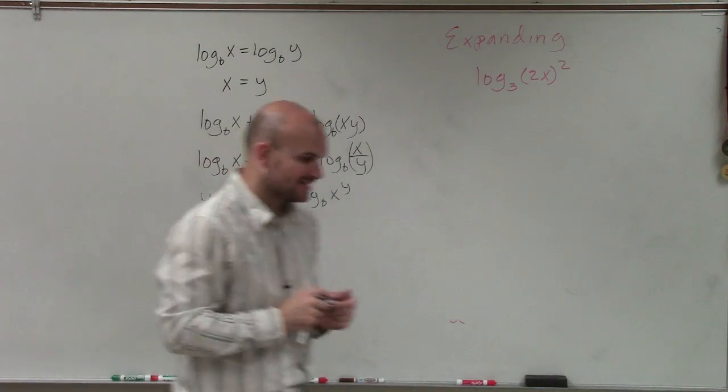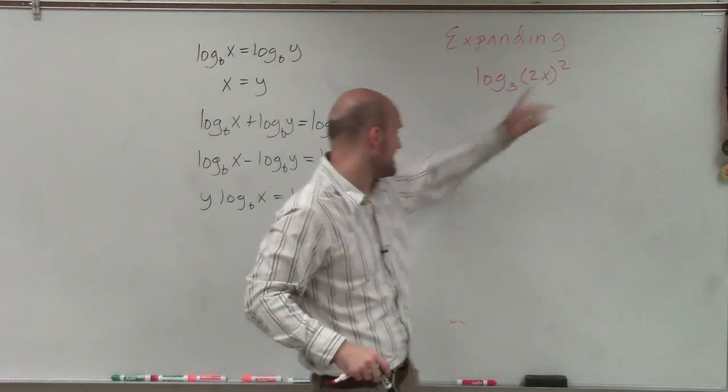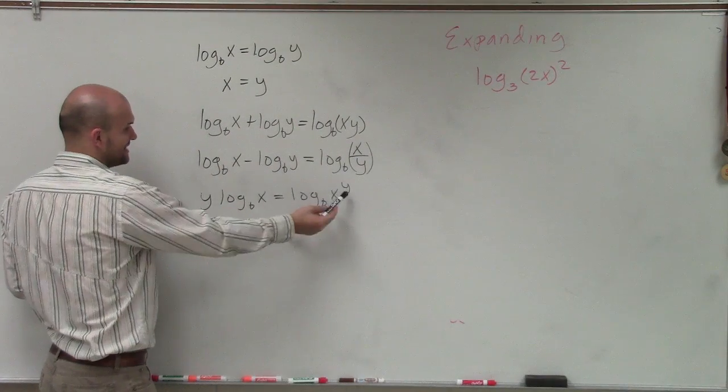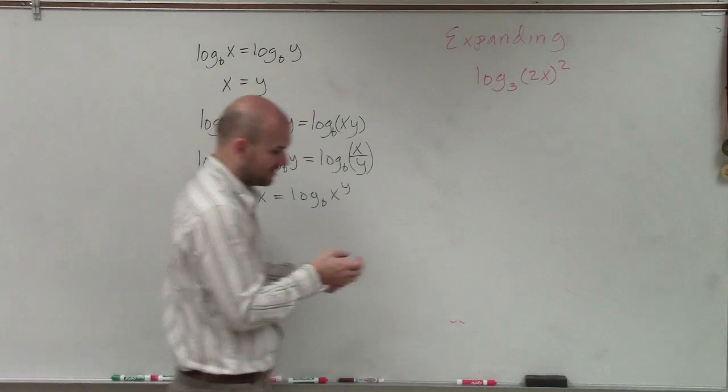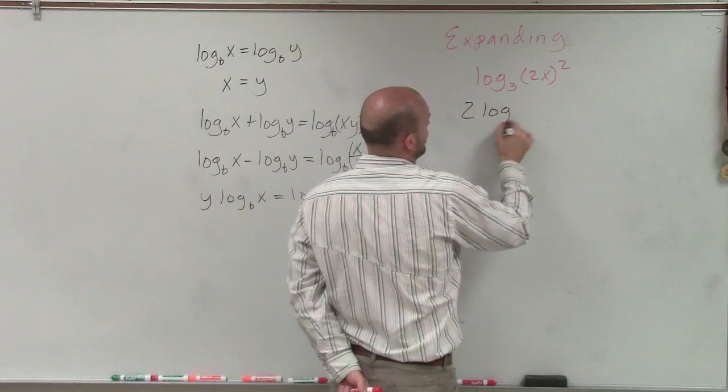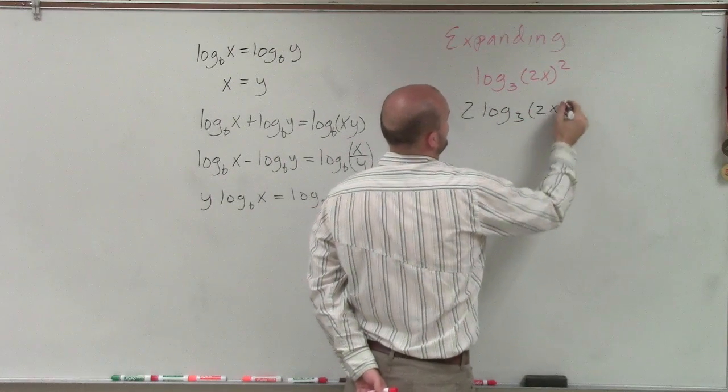So when expanding this, what I'm going to want to do is I can take this exponent up here and I can rewrite it down into the front. So that's going to be my first step when I'm going to expand. So I'm going to bring this down to 2 times log base 3 of 2x.